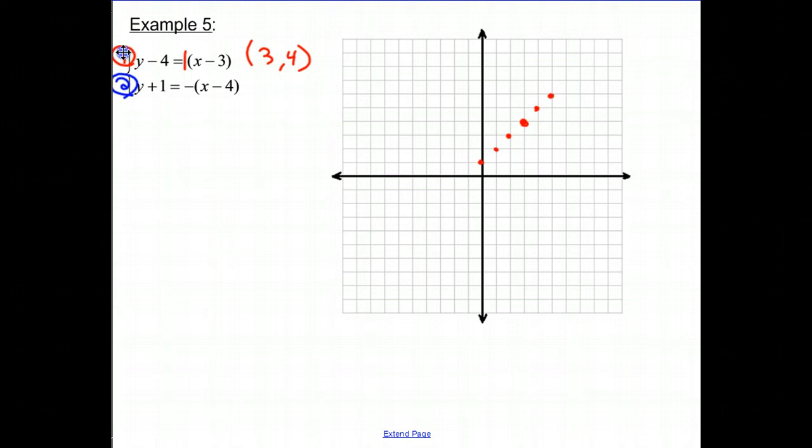My second equation, the point I know is 4, negative 1. So I will do 1, 2, 3, 4, negative 1. And my slope is a negative 1.